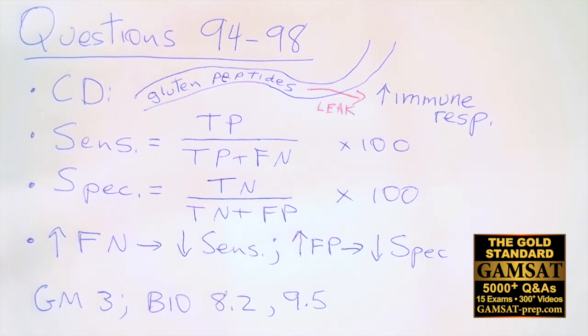Now we use the same logic for false positives. It's only related to specificity, and if you increase the number in the denominator - the false positives - then you will decrease the specificity. So now we look in the table for the lowest specificity and we find it for zonulin at 30%. And so for 96, the answer is A.